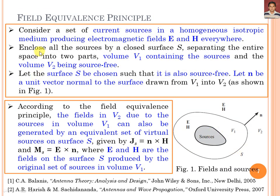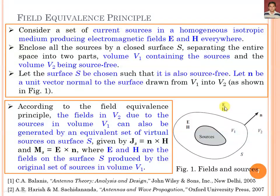To understand the field equivalence principle, we consider a set of current sources in a homogeneous isotropic medium producing electromagnetic fields E and H everywhere. We enclose all the sources by a closed surface S, separating the entire space into two parts: volume V1 containing the original sources, and volume V2 outside this surface. Volume V2 and the surface itself are source-free. The unit vector n-hat is normal to the surface, drawn from V1 to V2.